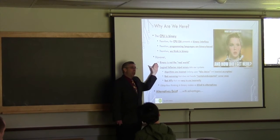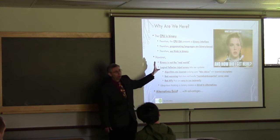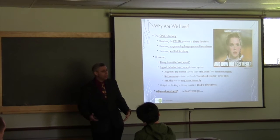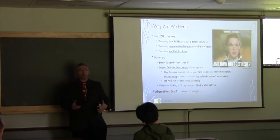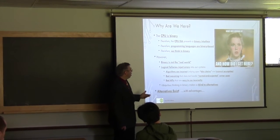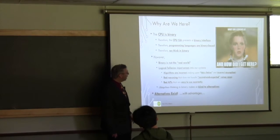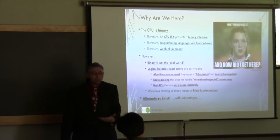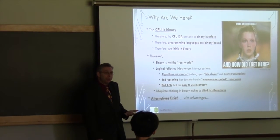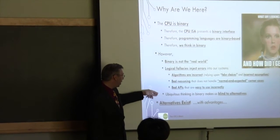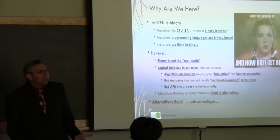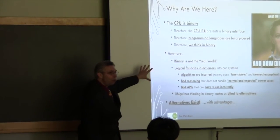But we have to encode this messy analog real world into our algorithms, data structures, navigation of data structures, error handling, and weird edge cases. That encoding is lossy and fraught with error. So we start introducing fallacies — and a lot of times these fallacies are so ubiquitous we just deal with them and move on. Our algorithms are actually based on false choices in a lot of cases. Bad reasoning, bad APIs. And because we're thinking in binary, these alternatives are kind of non-obvious. This is how we were raised as programmers.